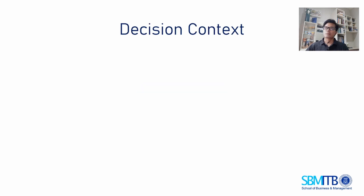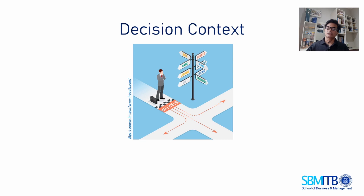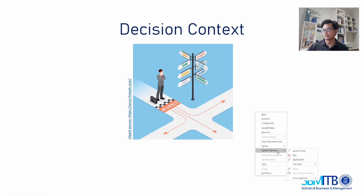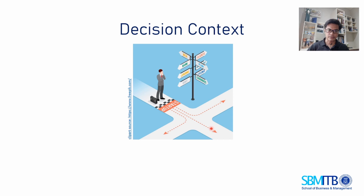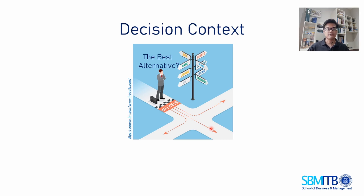We will start with an illustration. In any decision context, we have a decision maker who has several alternatives, and he should decide which alternative offers the maximum benefit for him — which alternative will lead him to the predetermined objective.